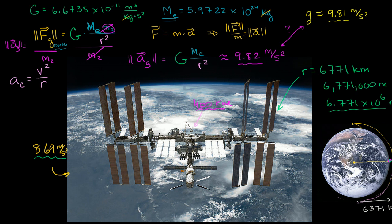So in this case, it would be the radius of the orbit, which would be the radius of the Earth, plus the altitude. So that, we already figured out in the last video, is 6,771 kilometers.